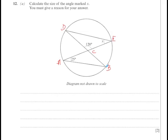So angles on the same arc are equal, so CBA has to be equal to x. Angles on the same arc.